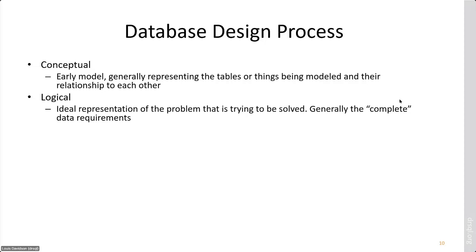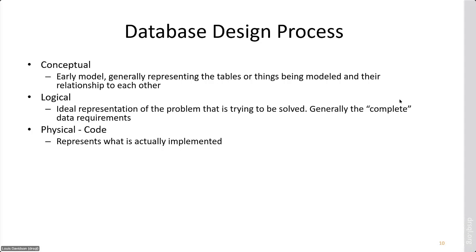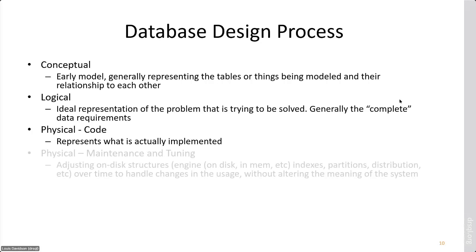At that point you review with the customer and then build a logical model. You say a credit card is a credit card number with certain details — things you need to have. You start to dig down: what should I be capturing? Should I, as a company, store a credit card number, and what security do I need? What about a customer — how do I identify them? Once we have the requirements and the customer agrees, we sit down and write code: CREATE TABLE, check constraints, primary keys. We put data in, test it, give it to the customer.